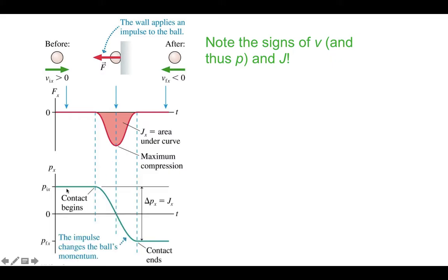You can also plot the momentum itself. The initial velocity is positive and to the right, giving a positive value of momentum in the x direction. As the ball comes into contact with the wall, momentum has to eventually reach zero because the velocity is stopped when the ball is at maximum compression. Then the velocity rebounds in the negative direction as the ball travels back to the left, and once out of contact with the wall, it moves at a constant velocity again.